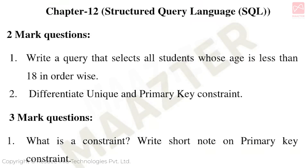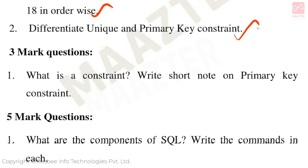Chapter 12: Structured Query Language. Important 2-mark questions: Write a query that selects all students whose age is less than 18 in order. Differentiate unique and primary key constraints. Important 3-mark questions: What is a constraint? Write a short note on primary key constraints. Important 5-mark questions: What are the components of SQL? Write the commands in each.